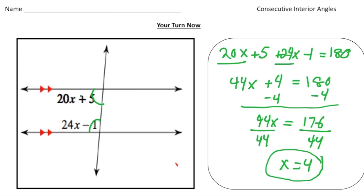So if I plug in x back into this first angle measure, 20 times 4 is 80, and 80 plus 5 is going to give us 85. So we know this angle here is 85 degrees. And if I plug in 4 here, 24 times 4 gives us 96, and 96 take away 1 gives us 95.